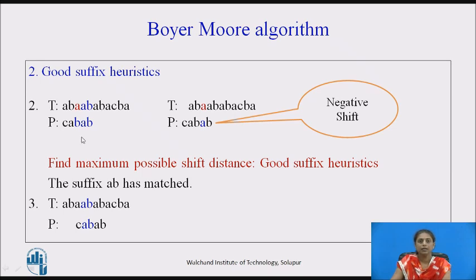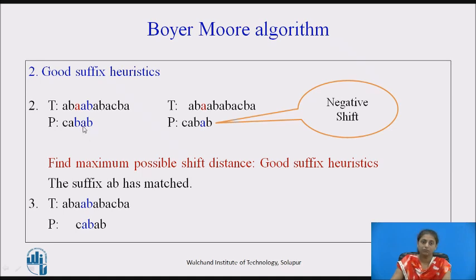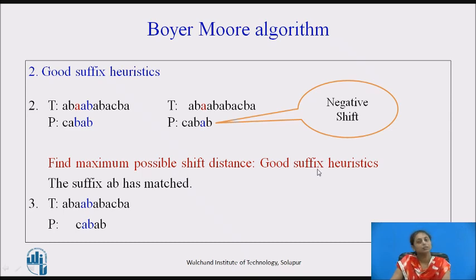Now consider this case: B and B are matched, A and A are matched, but there is a mismatch. The mismatch character is A. We need to align this character to where A appears in the pattern. The last occurrence of A in the pattern is at a position that would require shifting the pattern to the left — which is a negative shift. Therefore, we need to find the maximum possible shift distance, and this is called good suffix heuristics.